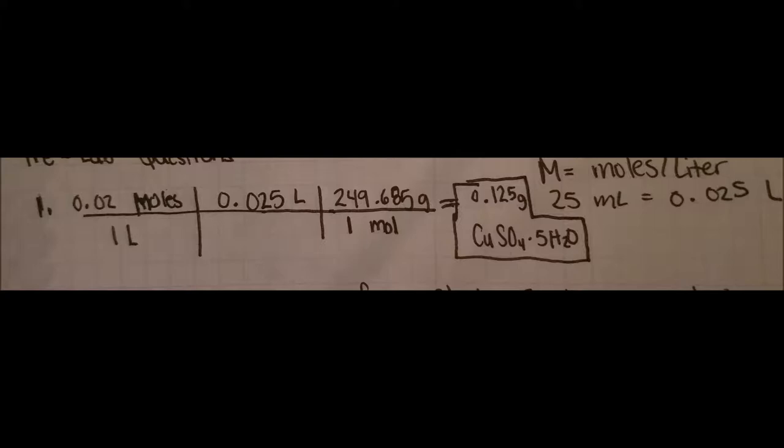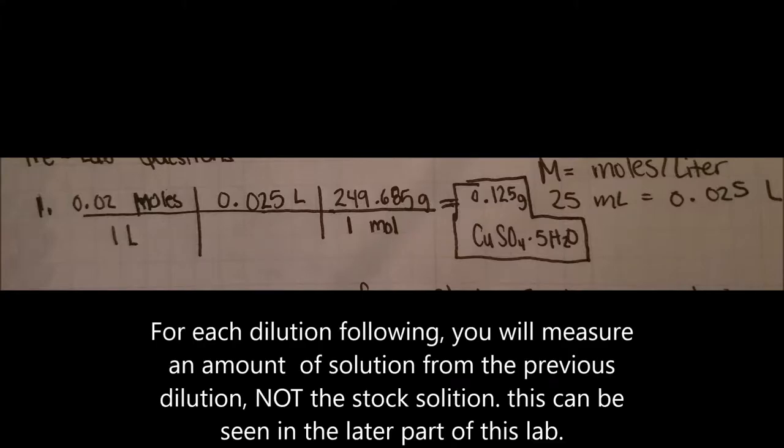Next, add more water until the meniscus rests on the line of the flask. Place the top on the flask and mix the solution. Pour into a clean beaker. This is the stock solution. From the stock solution, you will make dilution one.